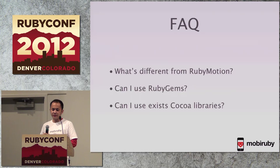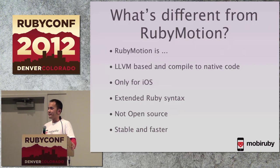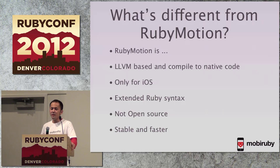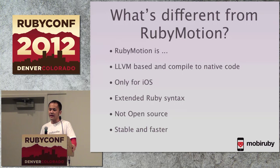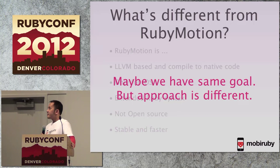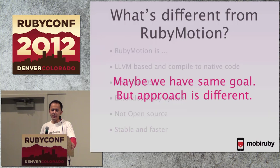I have three frequently asked questions. The biggest question is: what's the difference from RubyMotion? RubyMotion is LLVM-based and compiles to native code — it's only for iOS. But MobiRuby will release an Android version. RubyMotion also extends the Ruby syntax and is not open source. RubyMotion and MobiRuby may share the same goal, but their approaches are very different. If you want to make an application soon, I recommend using RubyMotion — it's more stable and faster than current MobiRuby.